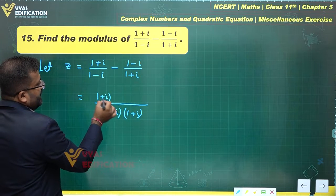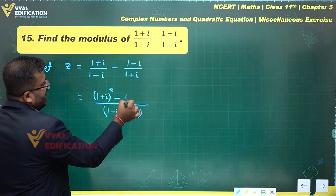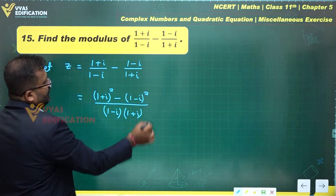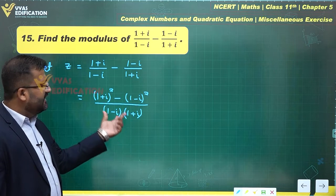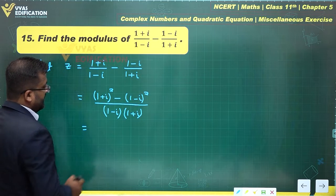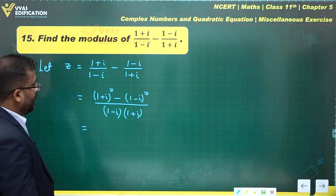What do we get over here? In the numerator is (1+i)² minus (1-i)². We are adding these two fractions and this is how we do it.